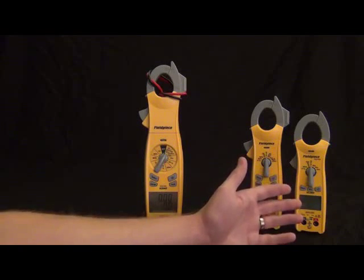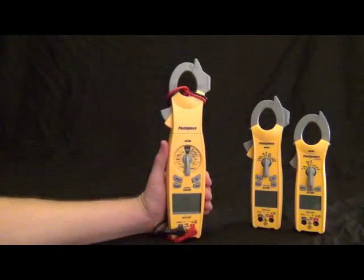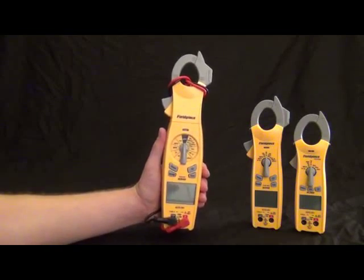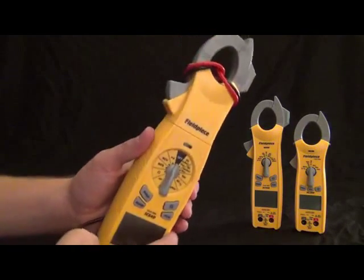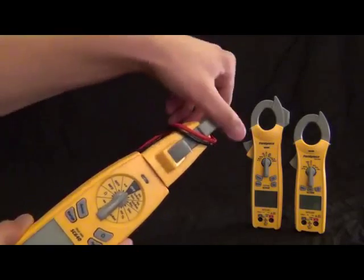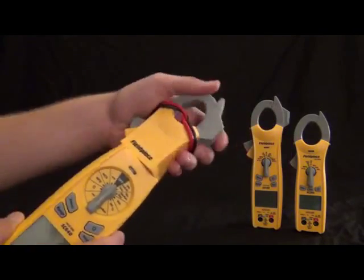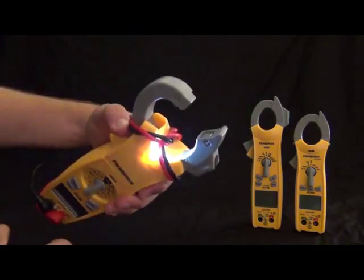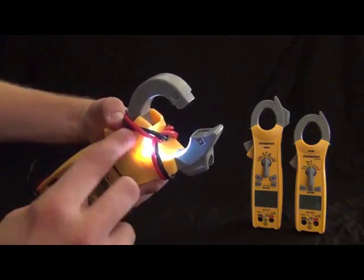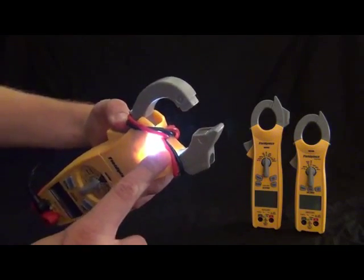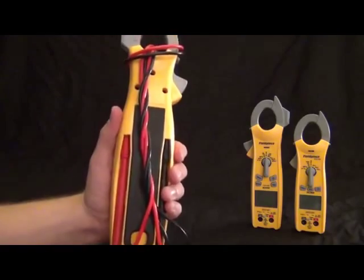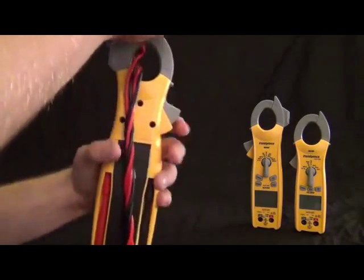Alright, let's go over the features of the SC640. Let's just check out the case first. First we got the swivel head, still a full swivel head, 180 degrees. And with the swivel clamp we got the jaw light on the top so you can see in dark places. This also has lead storage in the back. I have my leads wrapped around the clamp and I can just tuck my leads away right in the back.